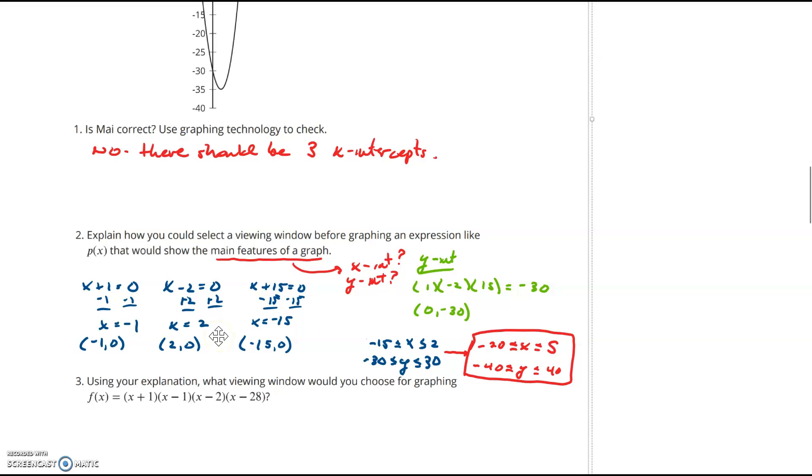On to part three of our question here. In part three, we want to use our explanation. What viewing window would we choose for graphing this function? Well, remember what we did is we looked for our intercepts. This first intercept is going to give me an x value of negative 1. This next one is going to give me an x value of positive 1. This next one is going to give me an x value of positive 2. And this fourth one is going to give me an x value of 28.